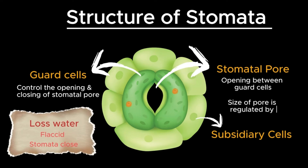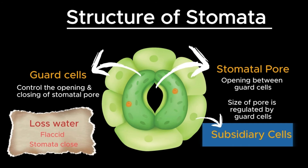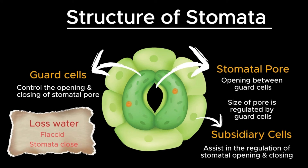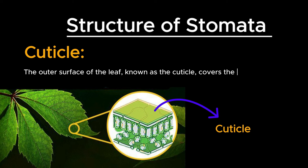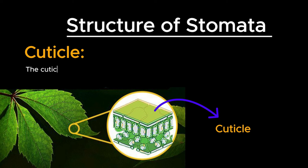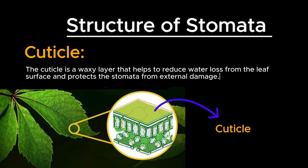The size of the stomatal pore is regulated by changes in turgor pressure within the guard cells. In some plants, especially those with specialized stomatal complexes, subsidiary cells surround the guard cells. These cells assist in the regulation of stomatal opening and closing and provide structural support to the stomatal apparatus. The outer surface of the leaf, known as the cuticle, covers the stomata. The cuticle is a waxy layer that helps to reduce water loss from the leaf surface and protects the stomata from external damage.